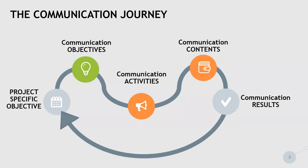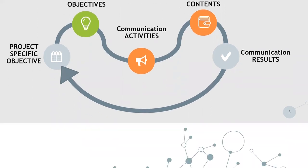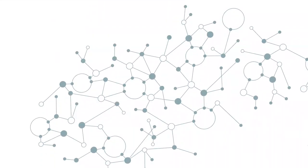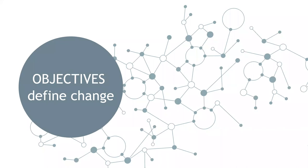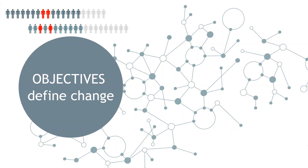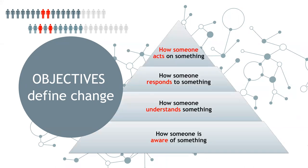For the communication beginners among you, I would now like to briefly touch on the terminology before digging into the application form. Let's begin with the communication objectives. Communication objectives define a specific change in view of a specific audience. This change can take different shapes. To reach a thematic work package objective, you might need to change how aware a specific target audience is about what you do, how much they know about what you do, how they respond to what you do, or how they behave in view of what you do.